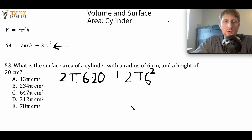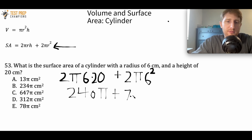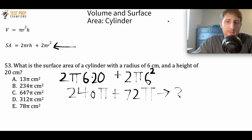Anyway, this is how we'll have it set up. We have 2πrh, so it should be 2π(6)(20) plus 2π(6²). If we put this in our calculators we get 240π plus 72π. The key here is to just add 240 and 72 and bring the pi along for the ride, which gives us 312π.